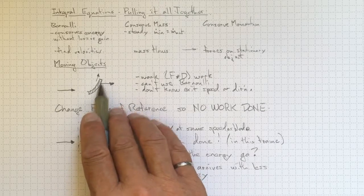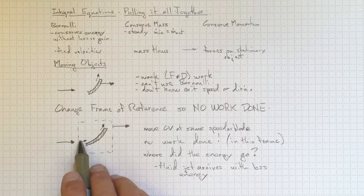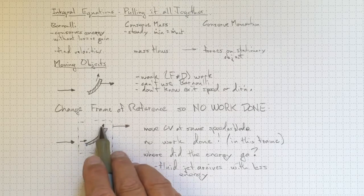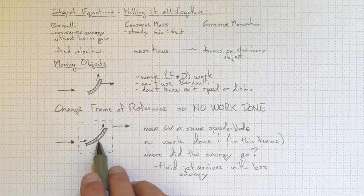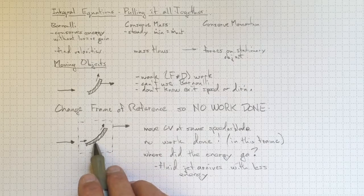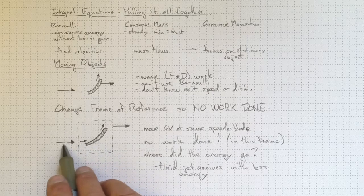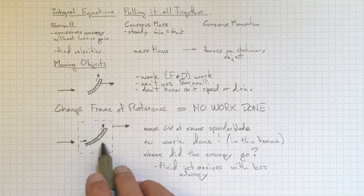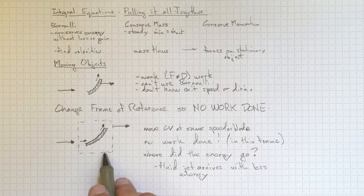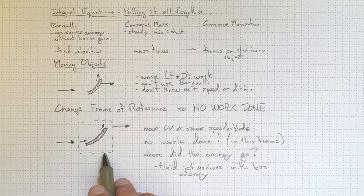So we start with this moving problem. We convert it into a stationary problem. We can find the forces. The forces will remain the same in both frames of reference. Having found the forces, we can then go back out and find out how much work was actually done. So let's go on and try this on a few actual cases and see how it works.